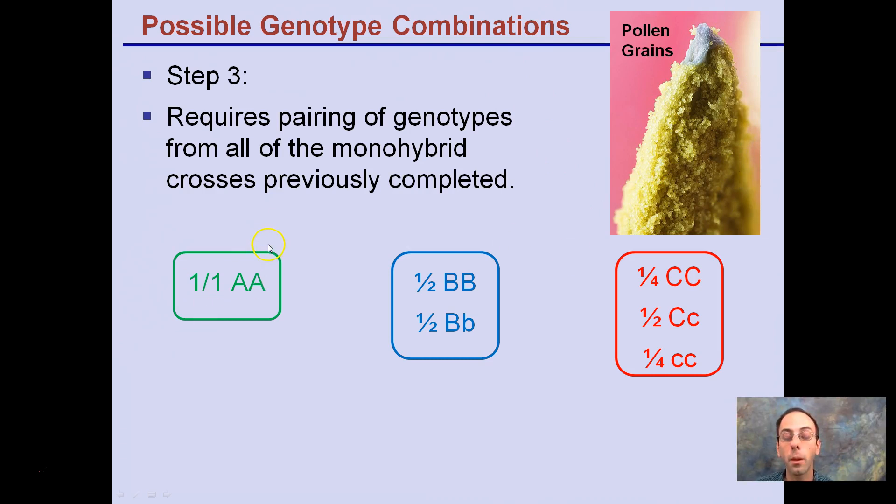So 100% of the time it's always going to give a homozygous dominant for A, half will be homozygous dominant for B, half will be heterozygous for B, and then for C, remember, a quarter of the time it'll be homozygous dominant, a quarter of the time homozygous recessive, and half the time heterozygous.